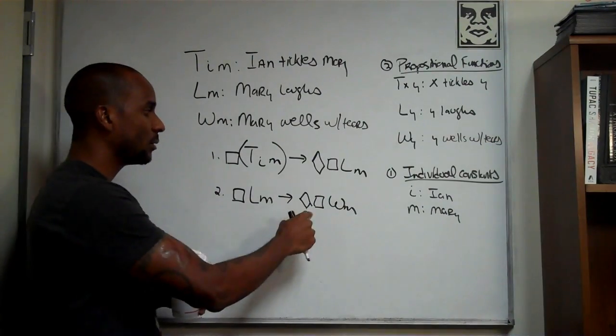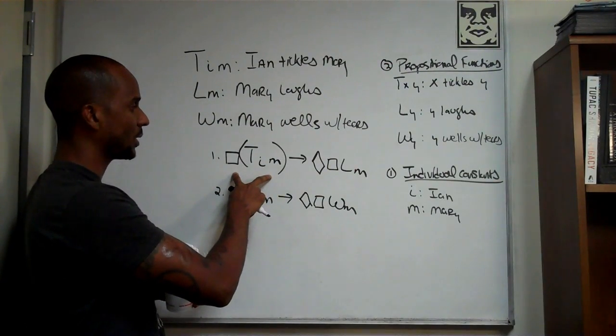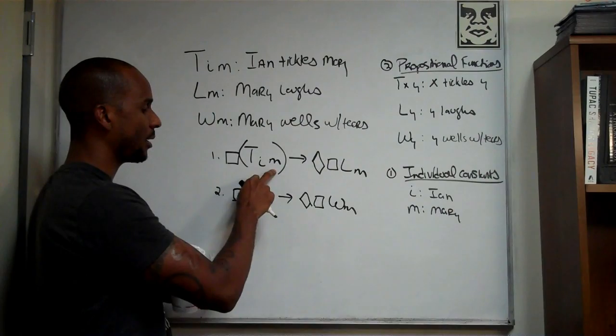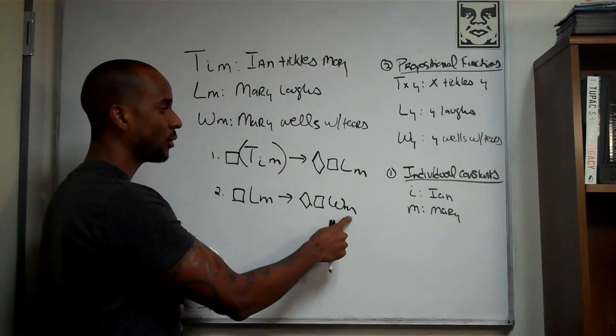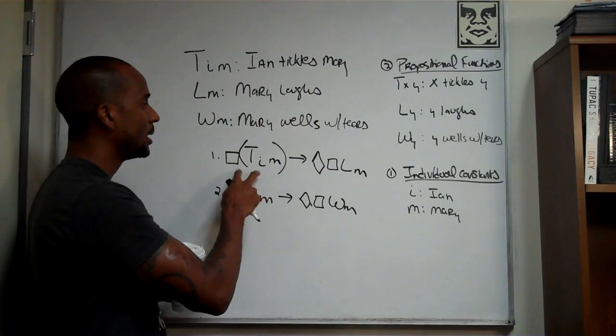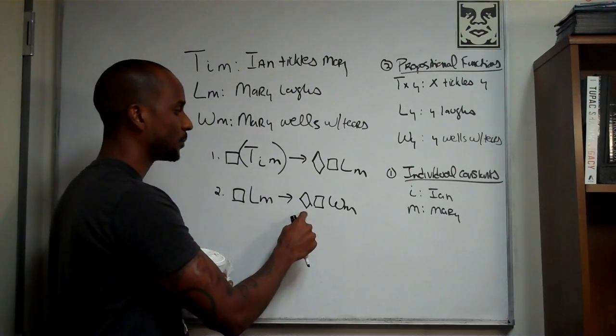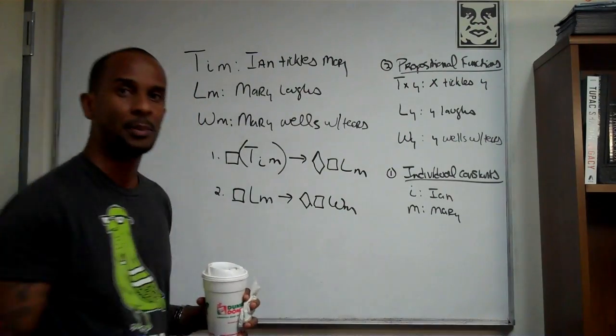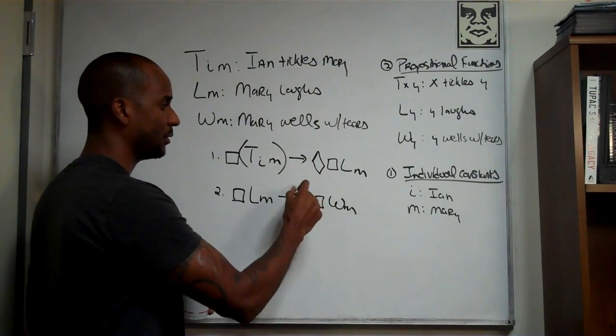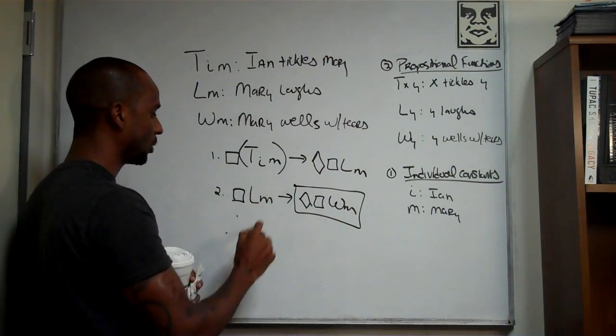Then we can formalize either the hypothetical syllogism connecting the necessity of Ian tickling Mary to the possibility of her tearing up, or the necessity of Ian tickling Mary to the necessity of her tearing up. But we wouldn't really know the final HS until a consequence of this state of affairs. This state of affairs is going to let us know what arrives in the conclusion.